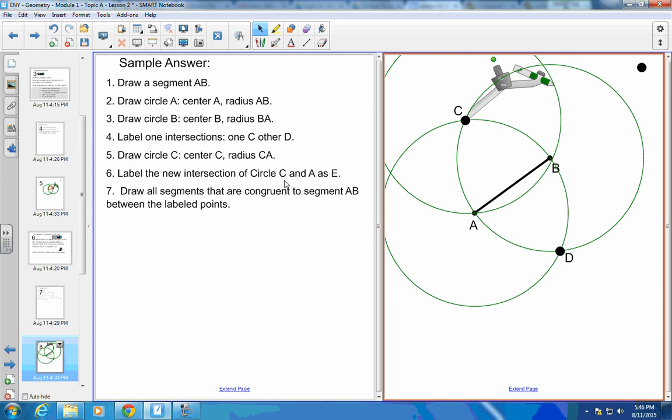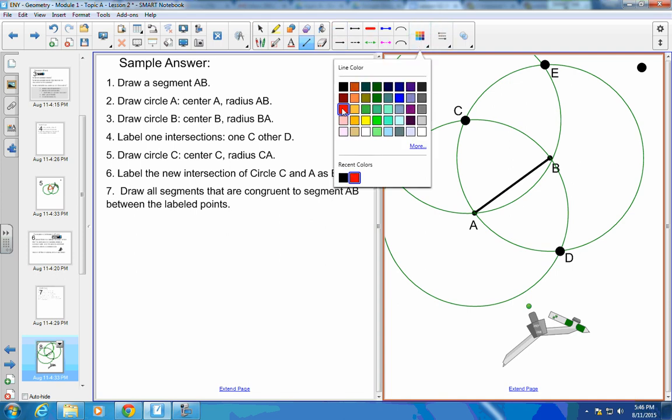Label the new intersection of circle C and circle A. Circle C and circle A intersect up here. There's where circle C and A intersect. And I'm going to call that E. So let me move my compass out of there and change colors so you guys can see it.